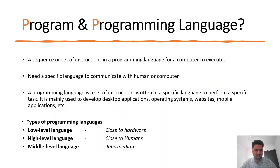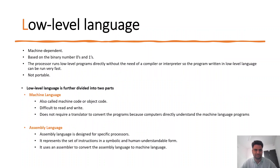Low-level programming languages are close to hardware — they are hardware-specific. High-level languages are close to humans. Low-level means easy to read for computers, while high-level means easy to read, write, and understand for humans. Middle-level language is an intermediate language that sits between low-level and high-level. C and C++ are examples.